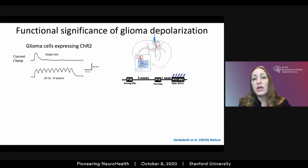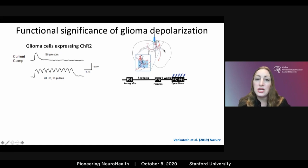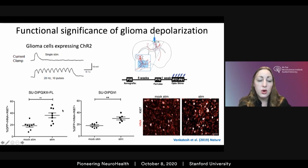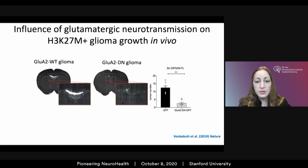We tested whether membrane depolarization itself was functionally relevant to the glioma cell — again using optogenetics, but this time expressing Channelrhodopsin-2 in the glioma cells. We can evoke depolarizing currents using blue light. Xenografting these cells into the brain allows us to optogenetically depolarize the tumor. We find that indeed membrane depolarization alone promotes the proliferation of these malignant cells. Conversely, blocking glutamatergic neurotransmission by expressing a dominant-negative version of the GluA2 subunit or pharmacologically blocking AMPA receptors results in a stark decrease in glioma growth and progression.